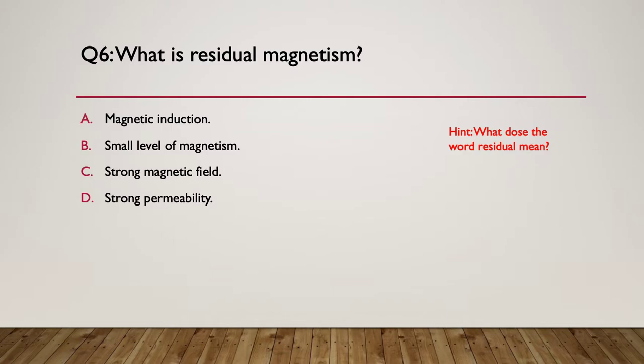Here's your hint: what does the word 'residual' mean? The answer is B — a small level of magnetism. If something has a small level of magnetism left over, it has residual magnetism. It may have been produced by magnetic induction, but that's not what residual magnetism is. It's certainly not a strong magnetic field, and strong permeability doesn't mean a magnetic field will be left. A small magnetic field that is left over is called residual magnetism.